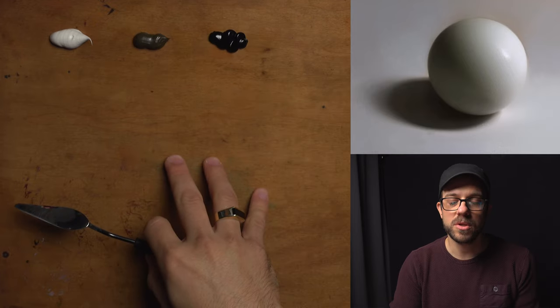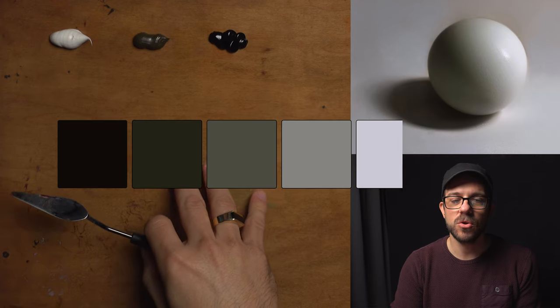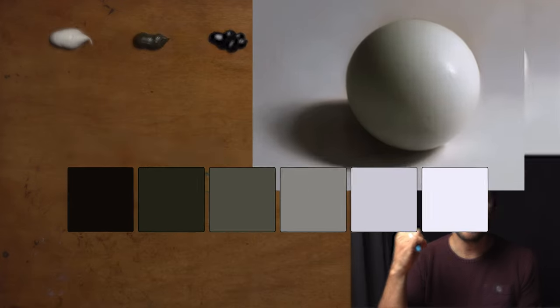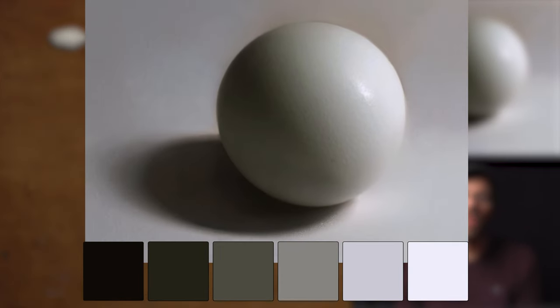The objective that we're working towards today is to get six good color values with a relatively even variation in value between them. Now looking again at the sphere above me, I want you to notice the occlusion shadow. So that's the darkest dark that is underneath the form of the sphere. This is going to be the first color value that we're going to mix up.